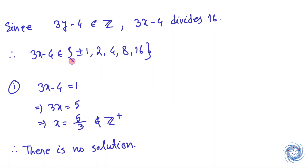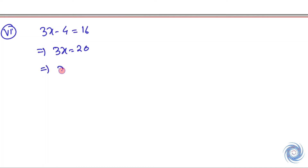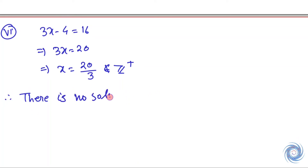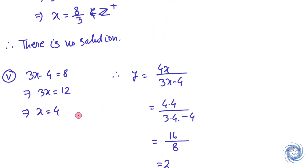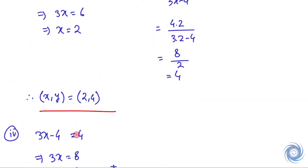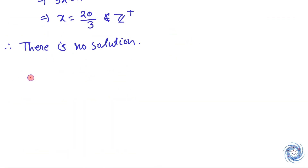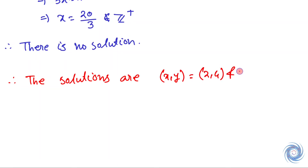Now let us take 3x minus 4 equals 16. Since x is not an integer, there is no solution. Combining all cases, the solutions are x, y equals 2 and 4, and x, y equals 4 and 2.